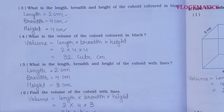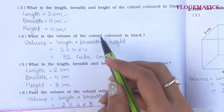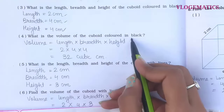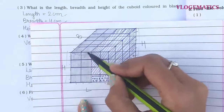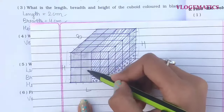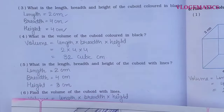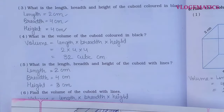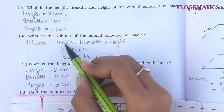Question 4: what is the volume of the cuboid colored in black? Using the formula length × breadth × height: length is 2 cm, breadth is 4 cm, height is 4 cm.